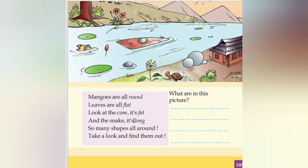The leaves are all flat. Look at the cow — it is fat. And the snake — it is long. Then what? So many shapes. We are going to see the shapes of the other objects. Take a look and find them out. That is how we are going to see the animals.